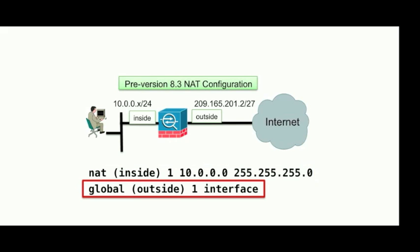The next line is the global command, where we'll specify the global or mapped IP address that we want to translate those hosts to. We specify the outside interface, we specify the same NAT ID, and in this case we're using the outside interface IP as the global or mapped IP address.